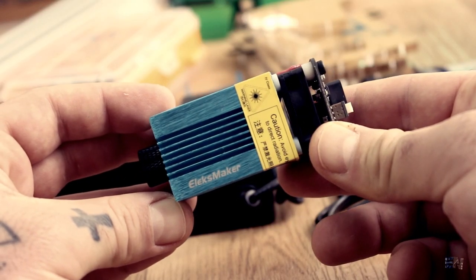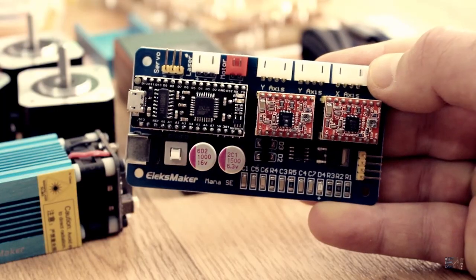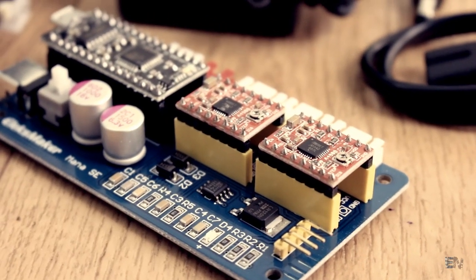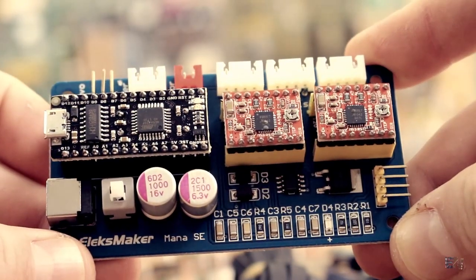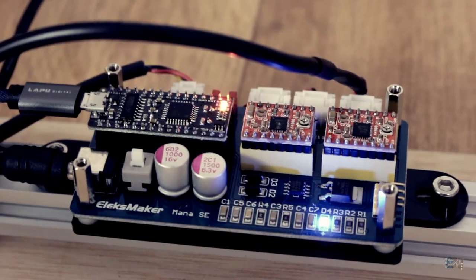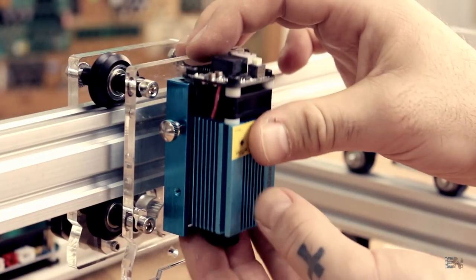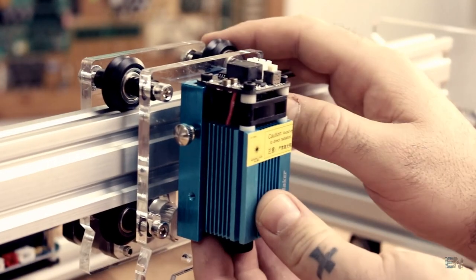Inside this box we have the 2.5 watt laser module, which by the way be very careful with it. We also have the main controller board based on Arduino. The board has two stepper motor drivers, so we won't be able to control the height of the laser module. We will only have Y and X movement and manually set the laser diode height as we will see later.